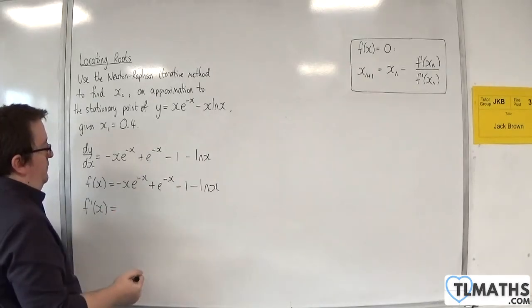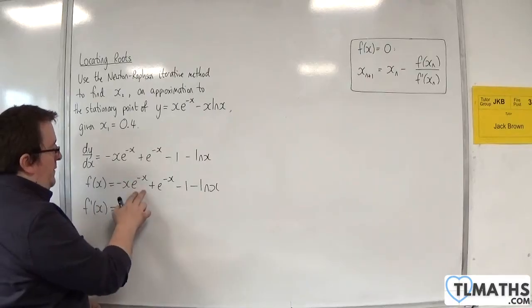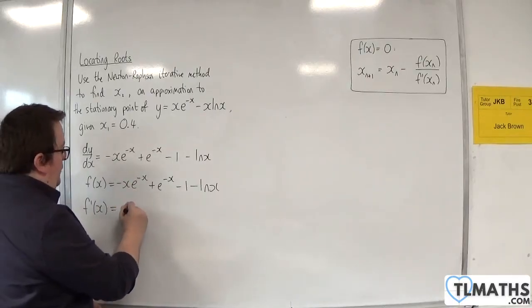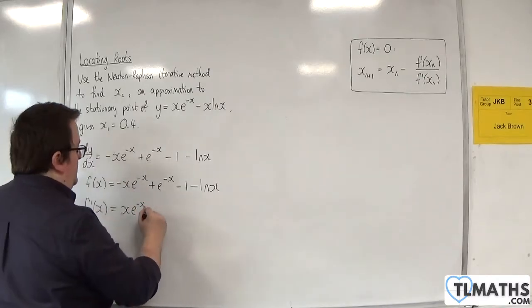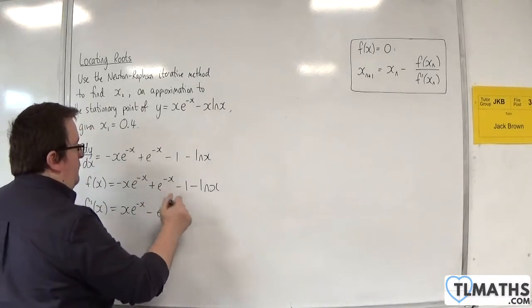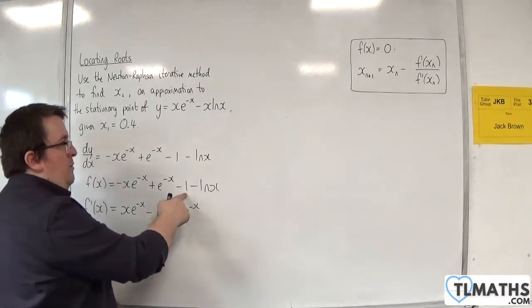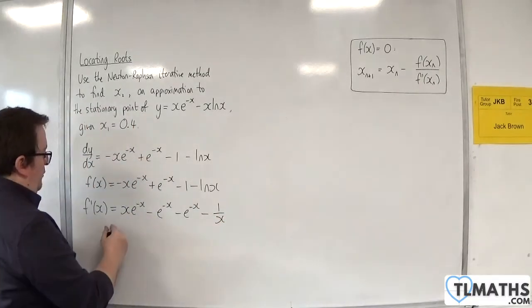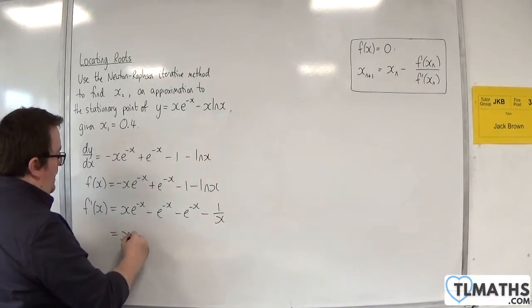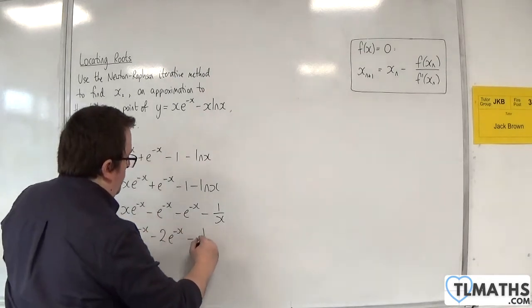I need to differentiate this. So we've got the first times the derivative of the second. So that would be xe to the minus x plus the second times the derivative of the first, so minus e to the minus x. This differentiates to take away e to the minus x. Minus 1 differentiates to 0. And minus log x differentiates to minus 1 over x. So we can tidy that up. We have xe to the minus x take away 2e to the minus x take away 1 over x.